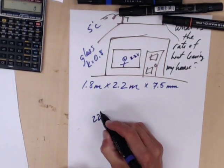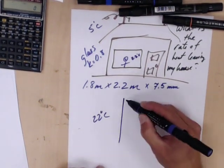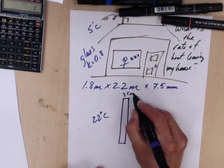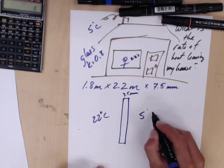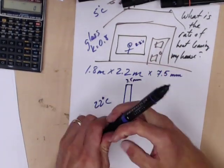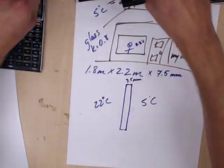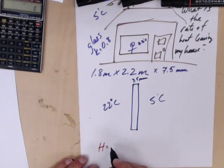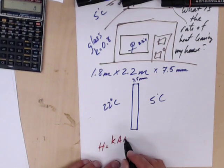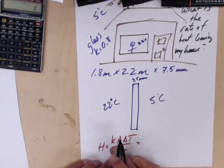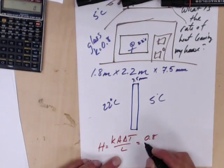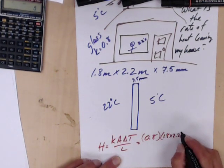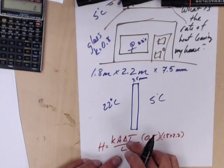So we're going to have, inside is 22 degrees C. Here's my glass window, which is 7.5 millimeters thick. And then outside is 5 degrees C. How much heat am I losing here? So, let's change colors because I'm getting tired of it. So, H is going to be K A delta T over L. K is 0.8 times the area, which is 1.8 times 2.2 times the delta T, which is 22 inside.